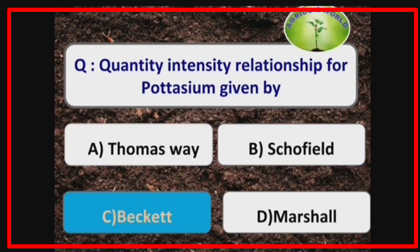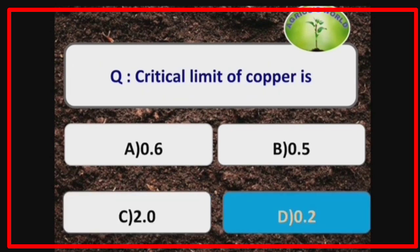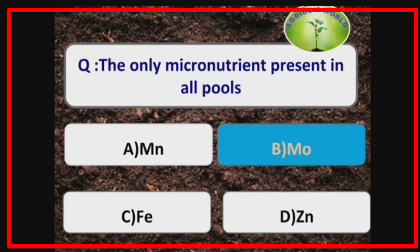Quantity-intensity relationship for potassium was given by the scientist Beckett. The critical limit of copper is 0.2 ppm. The only micronutrient present in all pools is molybdenum.